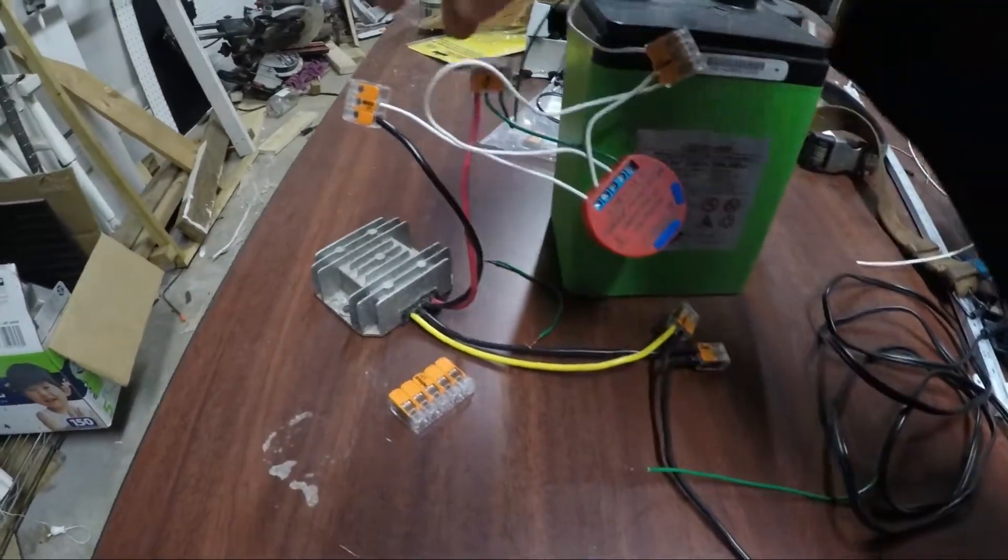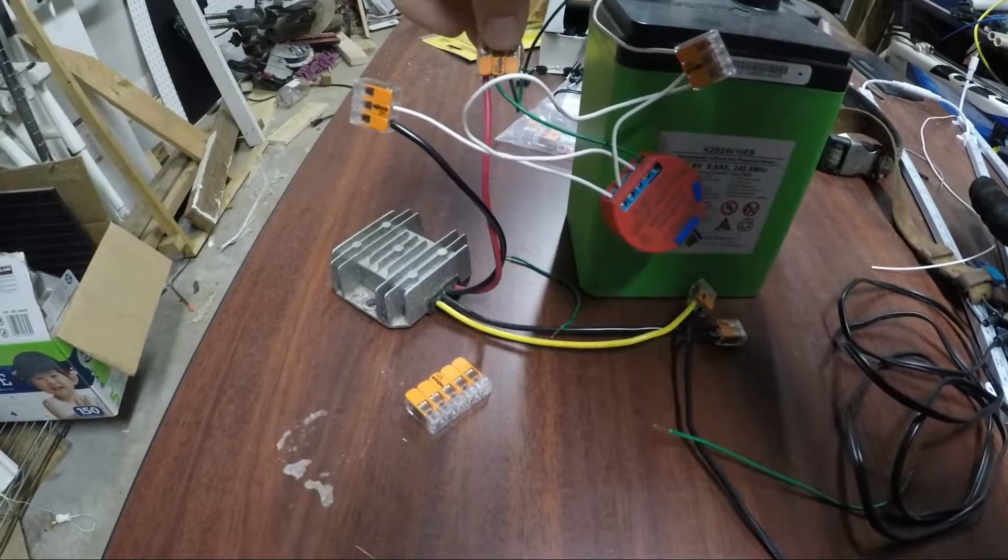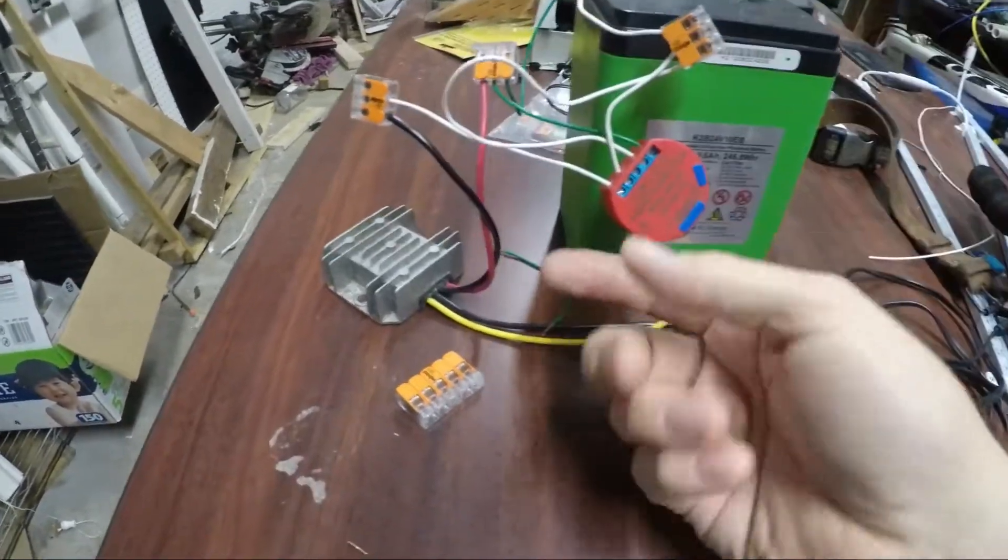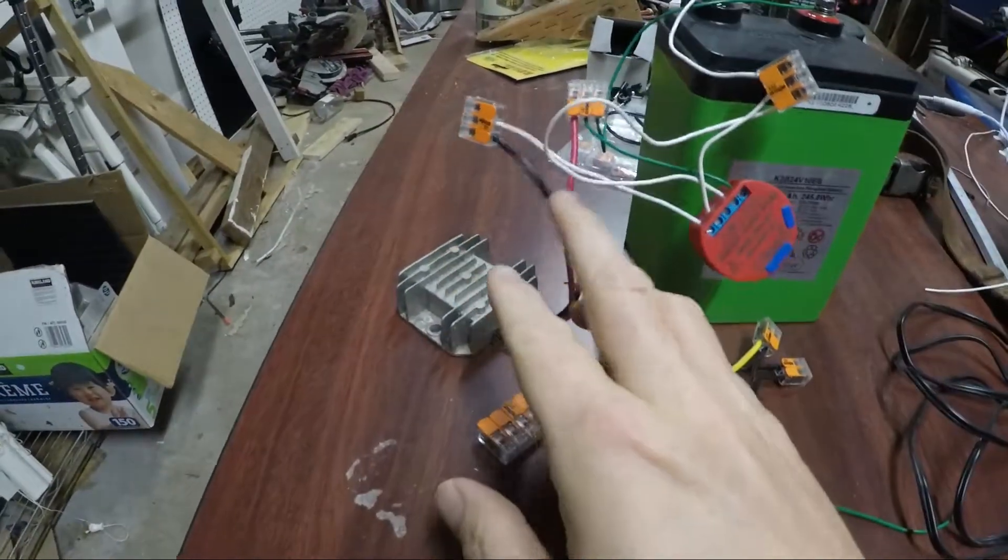So our power for the load, our positive, is going to be on the same wire nut. But this is going to actually trigger it through here on the ground line.